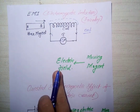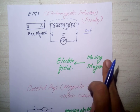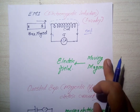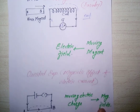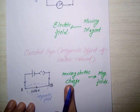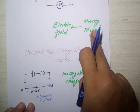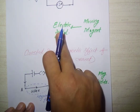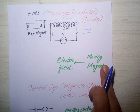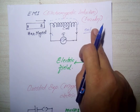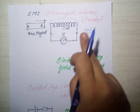Thus Faraday proved that the electric field is produced by a moving magnet - the magnetic field is converted into electric field. Similarly, Oersted proved that the electric field is converted into magnetic field. Faraday proved that a change in magnetic field is converted into electric field, and we can generate electricity by a moving magnetic field. This phenomenon is called electromagnetic induction.